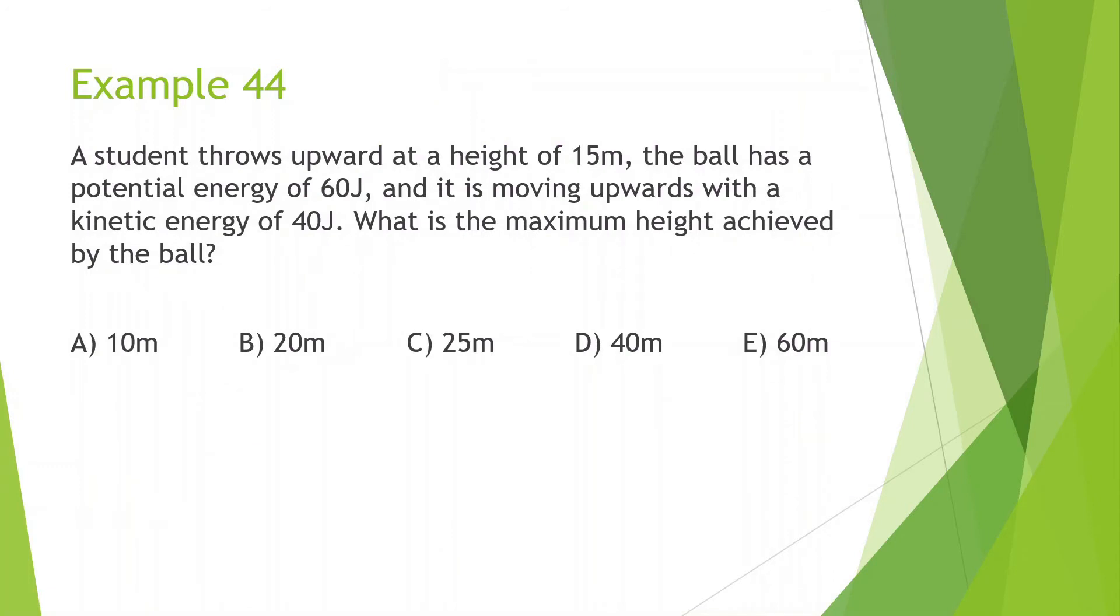A student throws upward at a height of 15 meters. The ball has potential energy of 60 joules and is moving upward with a kinetic energy of 40 joules. What is the maximum height achieved by the ball? So let's draw this scenario. We have a ball thrown. We're looking for the maximum height. Another thing we should know is when the ball is 15 meters up, it has 60 joules of potential energy and 40 joules of kinetic energy. What we should know at the very top is the gravitational potential energy is 100. So all the kinetic energy is going to turn into gravitational potential energy. Mechanical energy initial equals mechanical energy final.